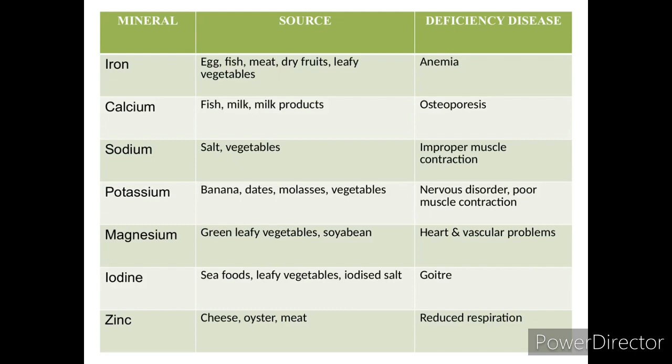Iron deficiency causes anemia. Major sources of iron include egg, fish, meat, dry fruits, leafy vegetables, etc.